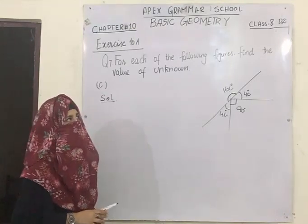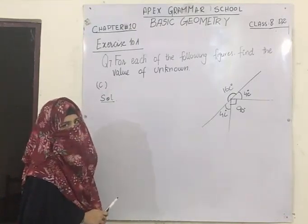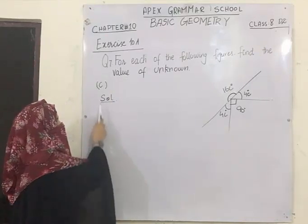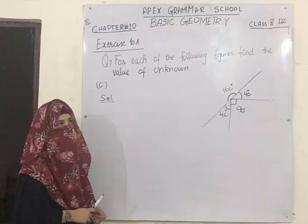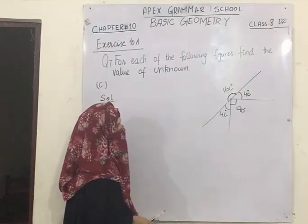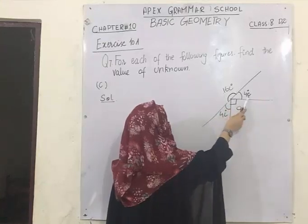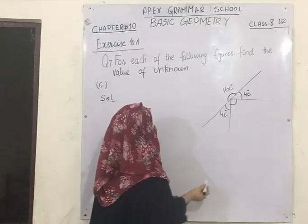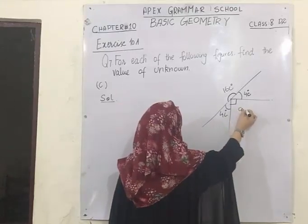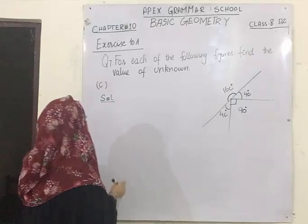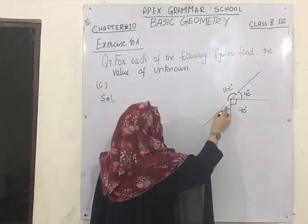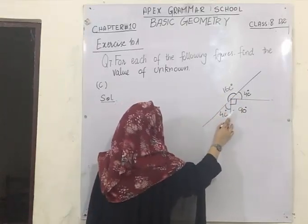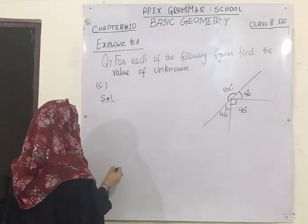Next is question number 7. In question number 7, for each of the given figures you have to find the value of the unknown. I am going to solve part C. In part C you can see there are 16c, 4c, and 4c. There is also one block shown, which represents an angle of 90 degrees. Angles at one point add up to make 360 degrees because they complete a full circle.